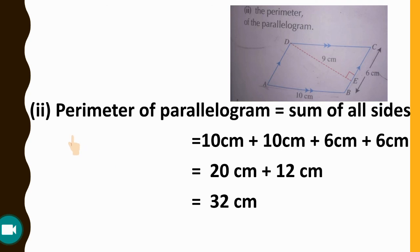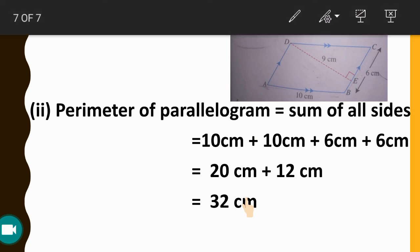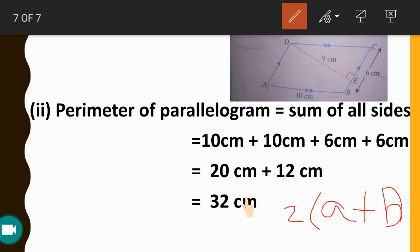You can also verify the perimeter using the formula 2 into (A plus B): 2 into (10 cm + 6 cm) = 2 into 16 cm = 32 cm, which confirms our answer.